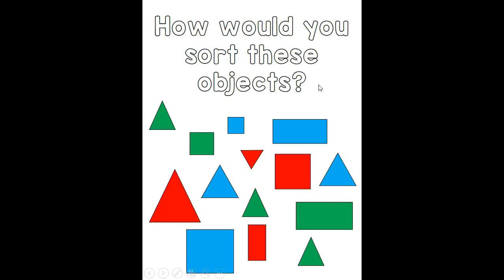I want you to take a look at this page, and you can feel free to pause the video and talk about this with a grown-up. How would you sort these objects? We've got a whole lot of different shapes — some triangles, some squares, some rectangles. They're different colors and different sizes. Go ahead and pause the video and talk with a grown-up about how you would sort these shapes.